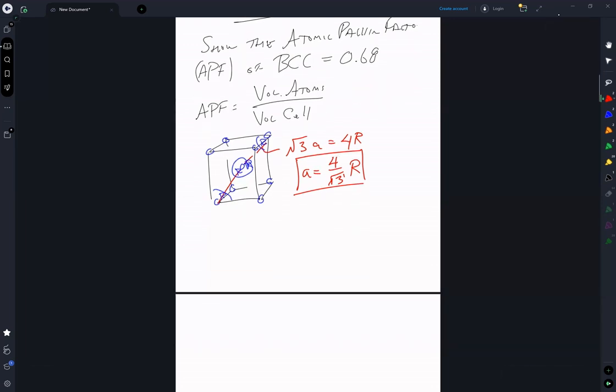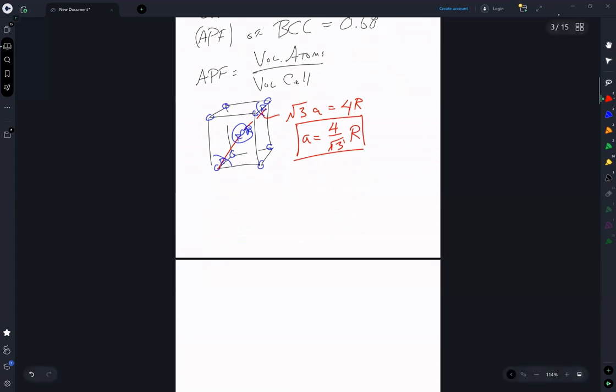So that allows us to write the volume of the cell as 4 over square root of 3r cubed, and the volume of the atoms as the number of atoms times 4 thirds pi r cubed.